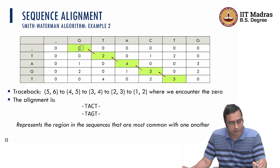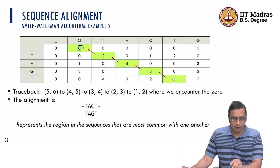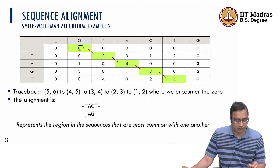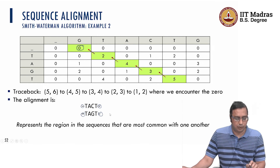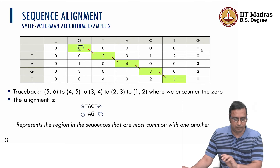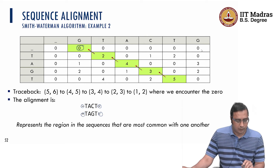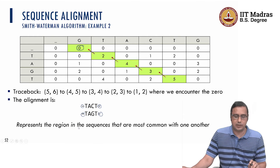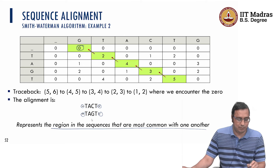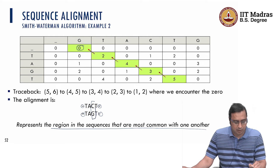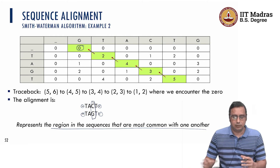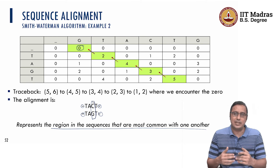Hence the alignment here is TAGT with TAGT. The caps on either side indicate there may be additional sequence on both sides of this local alignment. This represents the sub-region most common between the two sequences — it does not mean there is a complete perfect alignment. Here you can see there is a mismatch, but this is the most common sub-region of one sequence with the other.